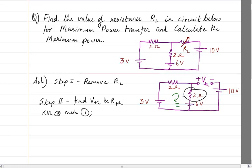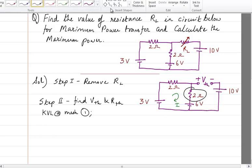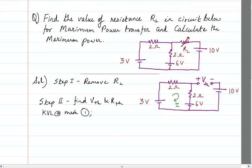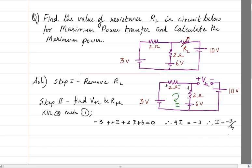For finding the voltage across the element, all I have to do is find the current I. Writing KVL at mesh 1: this is going to be minus 3 plus 2I plus 2I — there is no I2 because I2 is going to be 0 here — plus 6 equals 0. Therefore, 4I equals minus 3, and I equals minus 3 divided by 4. The minus sign means the current direction assumed is opposite to the actual direction, but that is taken care of automatically.